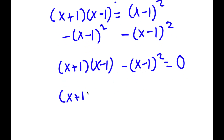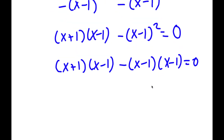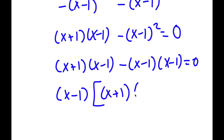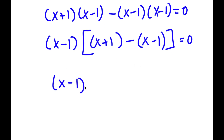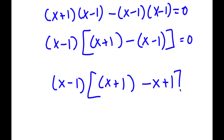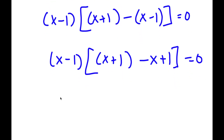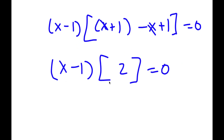Now, x minus 1 squared is the same thing as x minus 1 times x minus 1. If I factor out x minus 1 from this, I get x minus 1 times x plus 1 minus x minus 1, which is equal to 0. This simplifies to x plus 1 minus x plus 1. The two x's cancel out, so all I'm left with is 1 plus 1, which is 2.